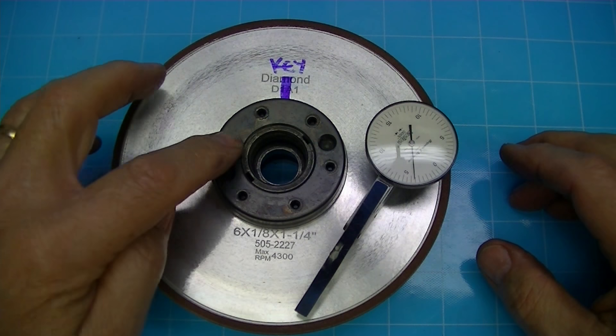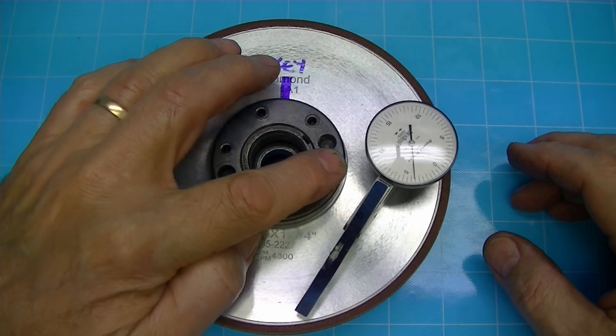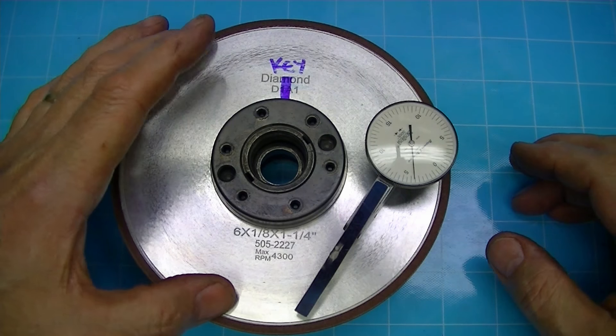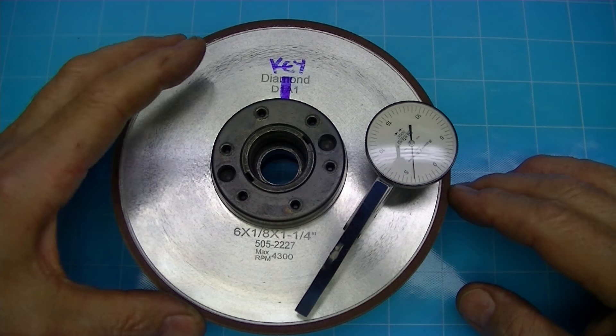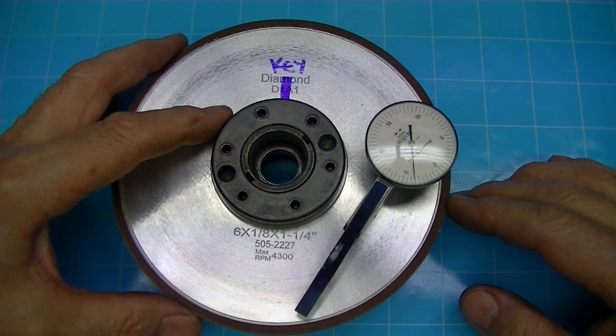Today's tool room tips are going to be making a special lock nut with set screw locking such that you can indicate in the super abrasive wheels and be able to tighten them without having them move when you go to tighten them up as you indicate them in.